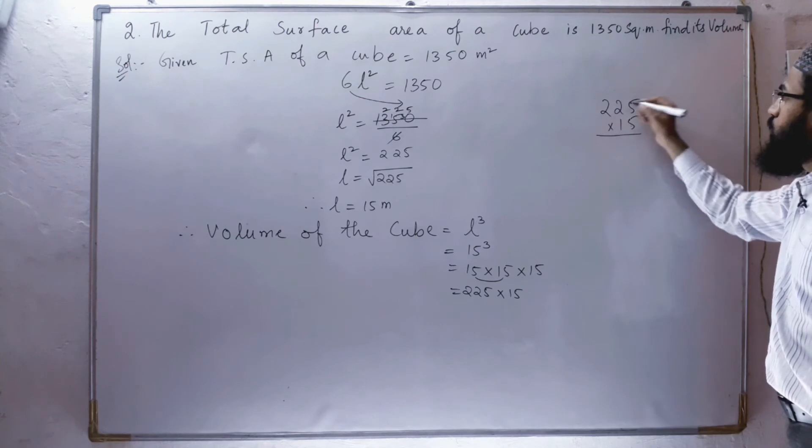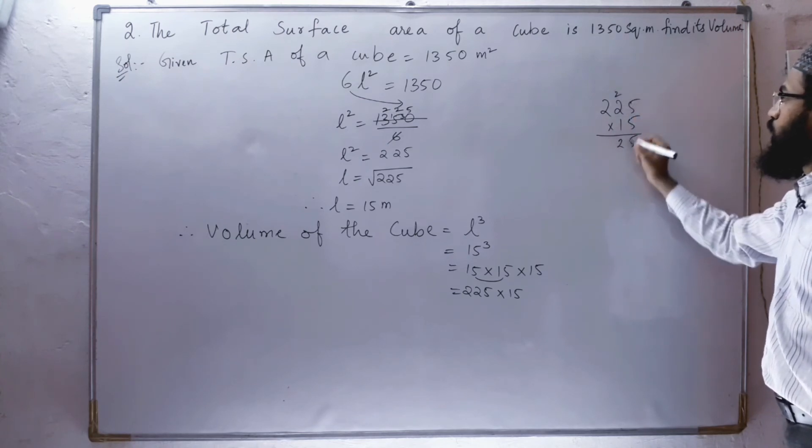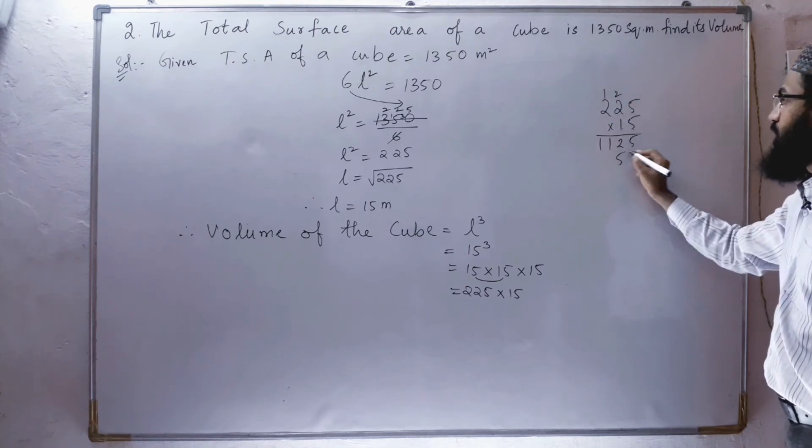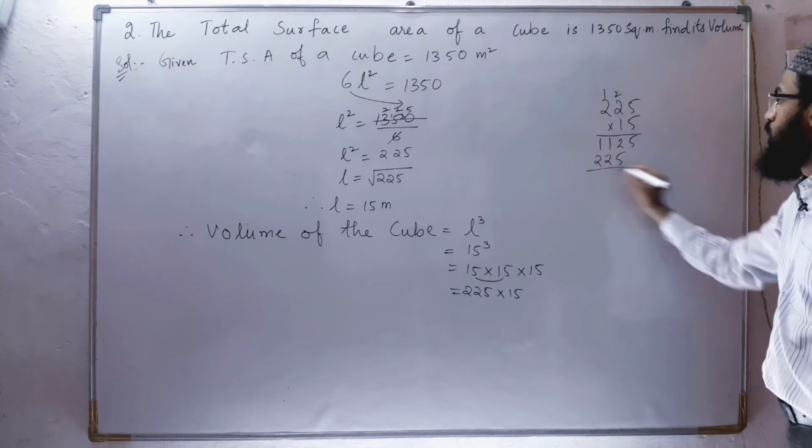5 times 5 is 25. 5 times 2 is 10 plus 2, 12. 5 times 2 is 10 plus 1, 11. 1 times 5 is 5, 1 times 2 is 2, 1 times 2 is 2.